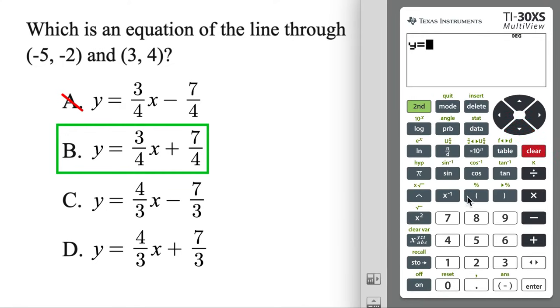So table, clear. Okay, start off with 3 over 4. Then our X. Then plus another fraction, 7 over 4. We got B. Let's do it.